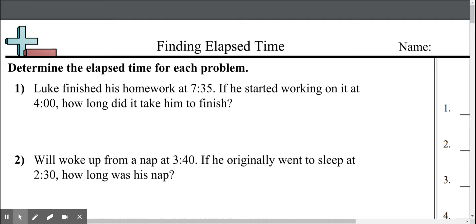So we're going to look at a couple of examples here and we're just going to talk about them. So, in the first problem, it says Luke finished his homework at 7:35. If he started working on it at 4 o'clock, how long did it take for him to finish? Okay, so we know a couple items here. We know his homework was finished at 7:35 and we know he started at 4 o'clock. Now, we can actually take this one of two ways. Let's look at it the first way here.